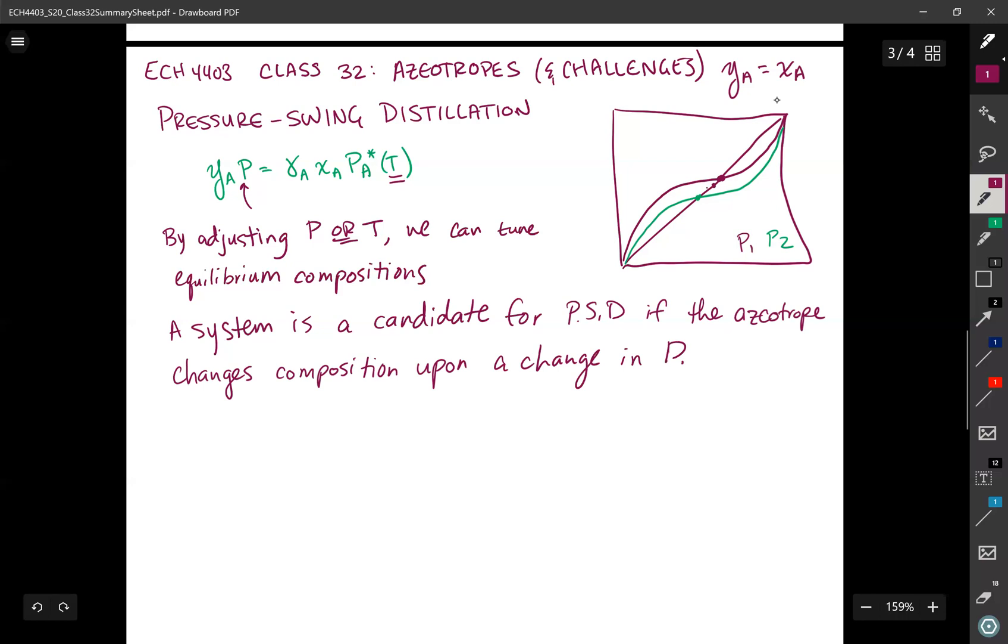Typically every mixture will have some dependence on pressure. But you don't want to make the second pressure like 20 atmospheres or something crazy high, because that will bring about a whole different host of challenges. What I mean when I say it's a good candidate is if by a small change in P, I can get a big change in the azeotrope - that is what I'm after.